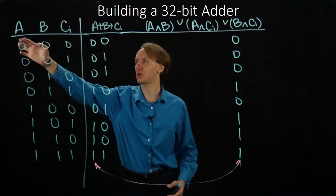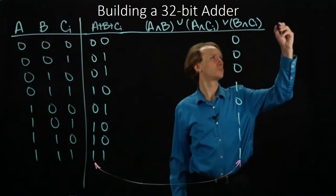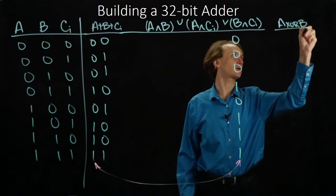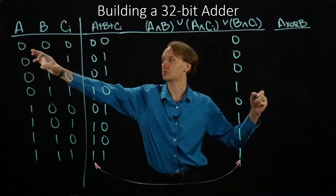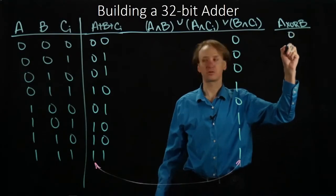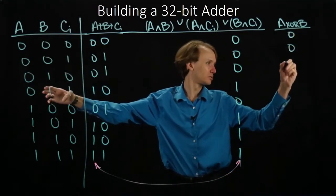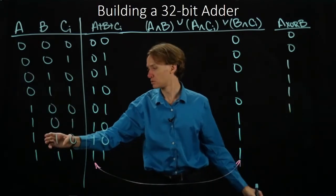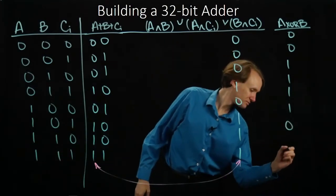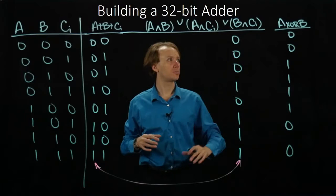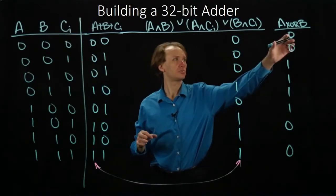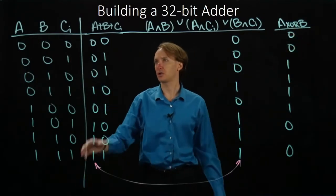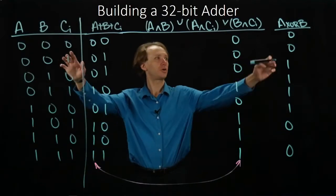So I'll start by seeing what happens when I have A XOR B. We had this before, but we'll bring this back. So 0 XOR 0 is 0, 1, 1, 1, 1, 0, 0. Now I'm just missing the carry-in bit. So I'm going to want to see... So let's look at what we've got for A XOR B, carry-in, and what I should get for a result.